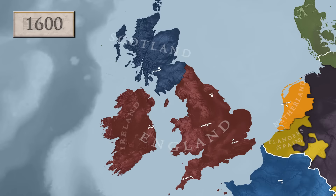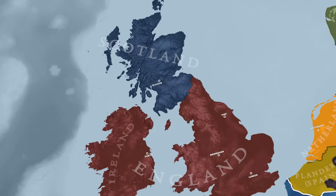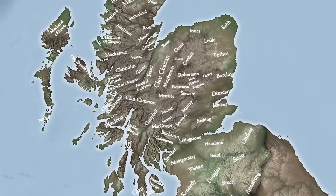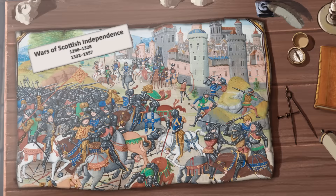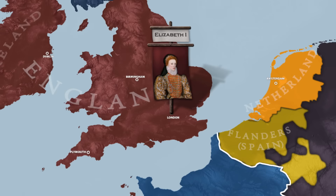Going all the way back to the 16th century, England and Scotland had been two entirely different governments under different monarchs, and in the case of Scotland, uniquely controlled in part by the Highland clan system. Furthermore, for centuries, the neighbouring states have been at odds with on-and-off warfare, with the Scottish Wars of Independence being well-remembered by both sides.